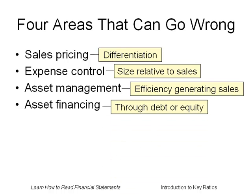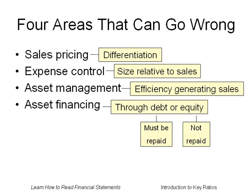Asset financing monitors how the assets have been financed. You can only finance assets two ways. You can borrow, which carries a risk — the risk is if you do not repay the loan, you can go bankrupt. Or you can issue stock or earn a profit, both of which are equity. Equity does not have to be repaid. You can pay a dividend or repurchase stock, but both are entirely at the company's discretion. Equity, therefore, carries less risk than liabilities.